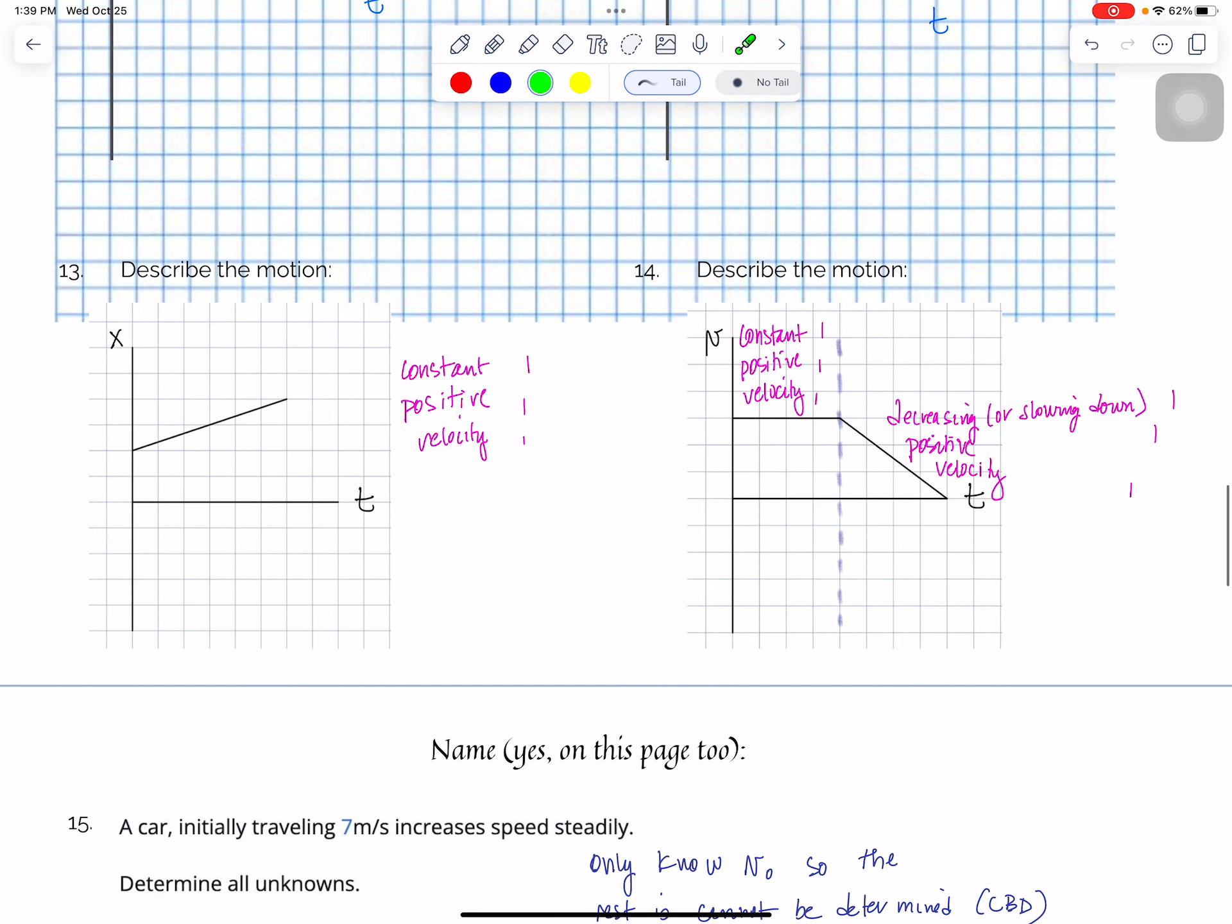Okay, next part, describe the motion. So I was looking for many, many people described the graph instead of the motion. So this is constant positive velocity, one point for each one of those. This one was two parts, so you actually needed two different descriptions. For this first part, constant positive velocity. And then for the second part, it was positive velocity. And then you need to either say like decreasing or slowing down. I think some people said to rest, and I accepted that as well.